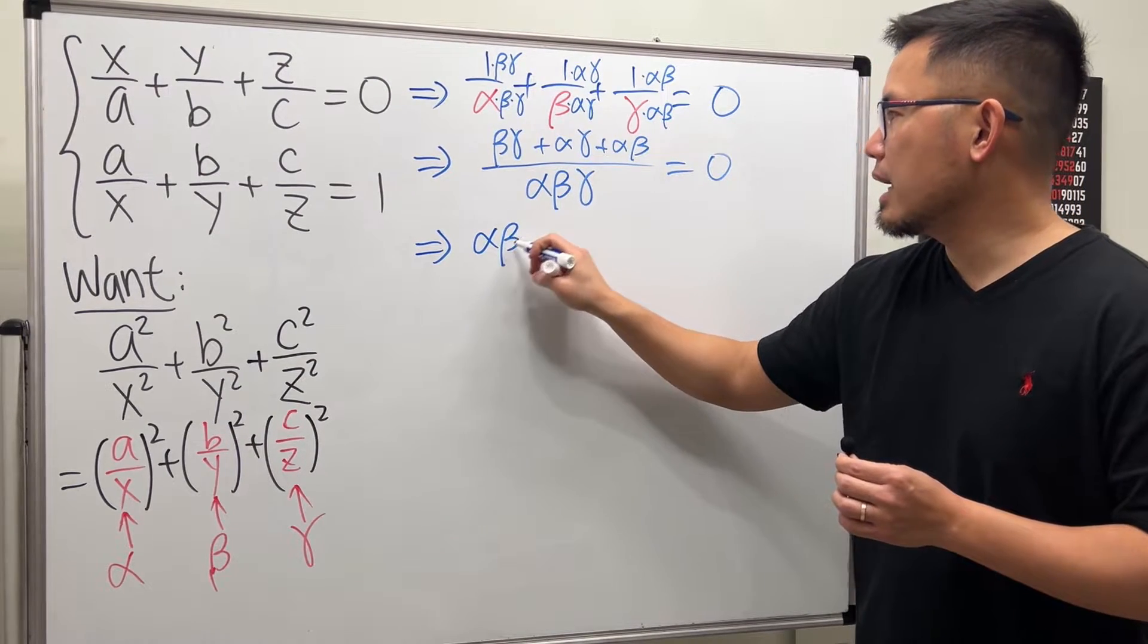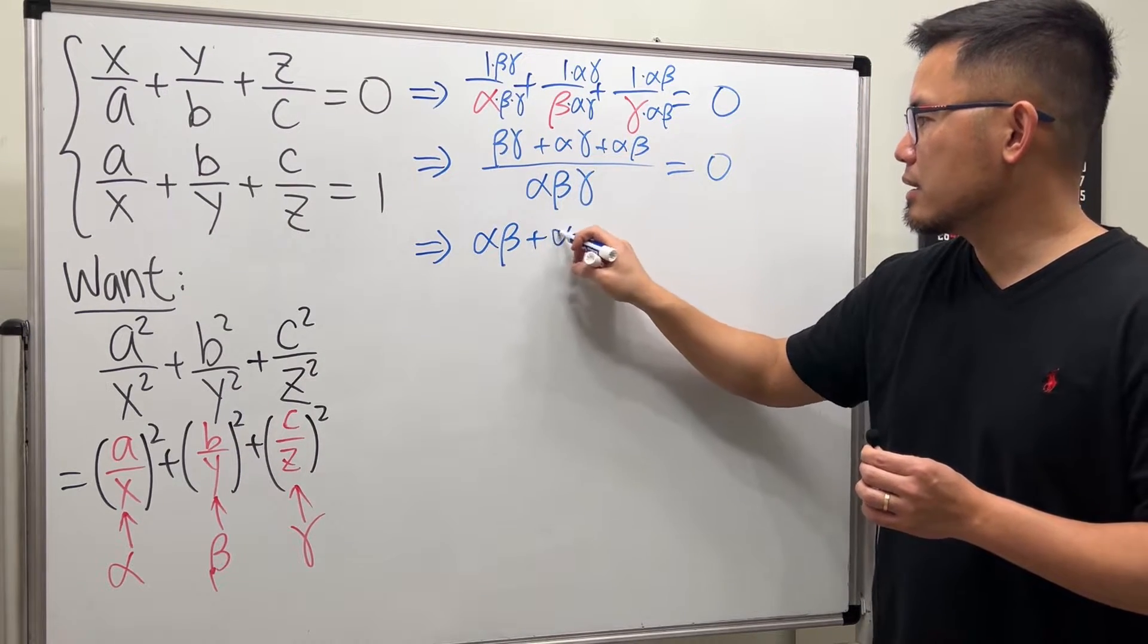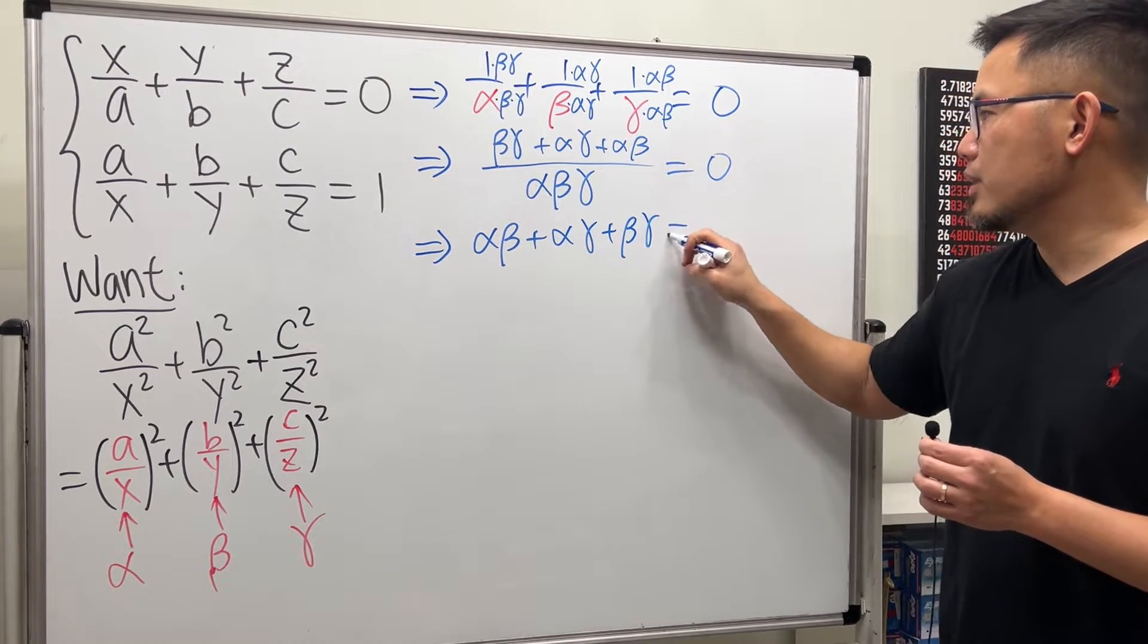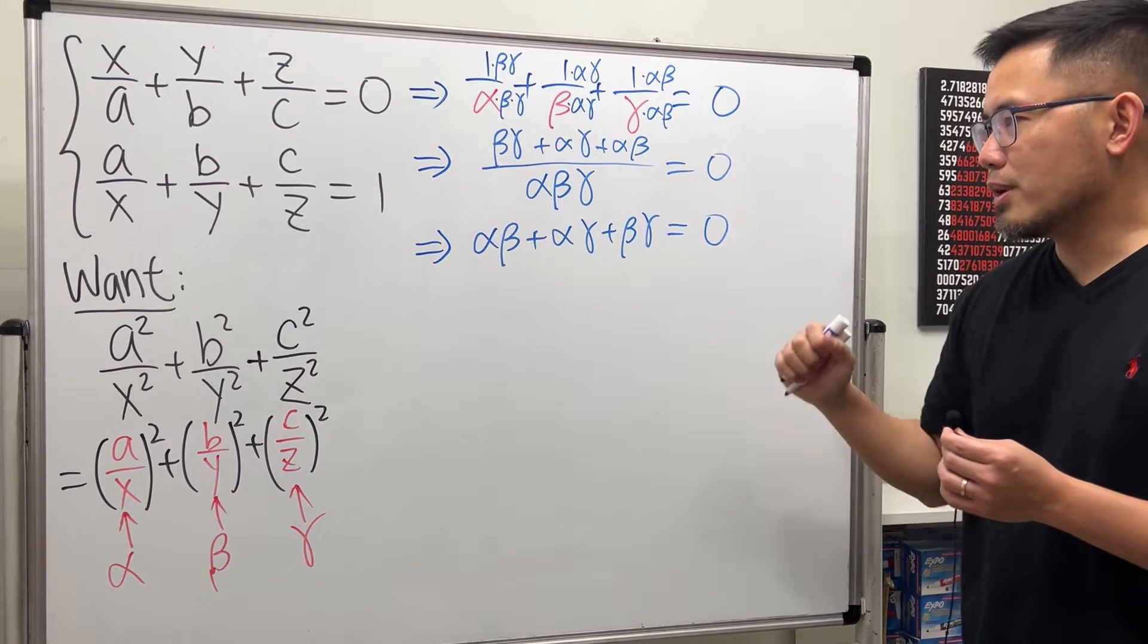So we have alpha beta plus alpha gamma and then plus beta gamma equals 0. So that's one of the equations.